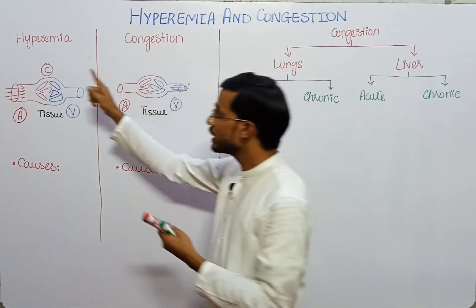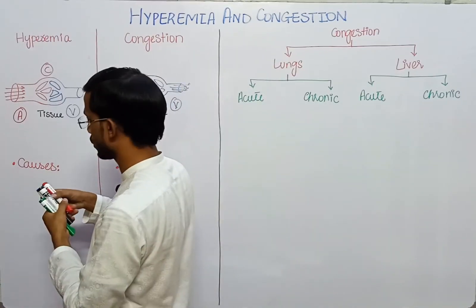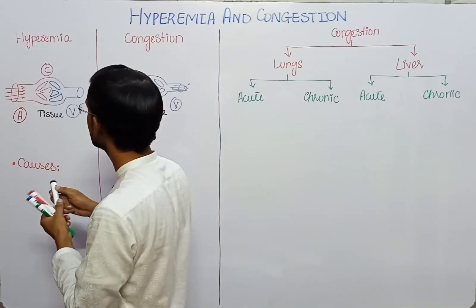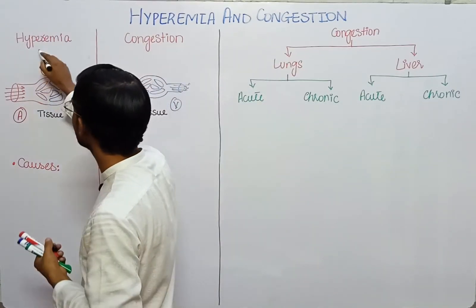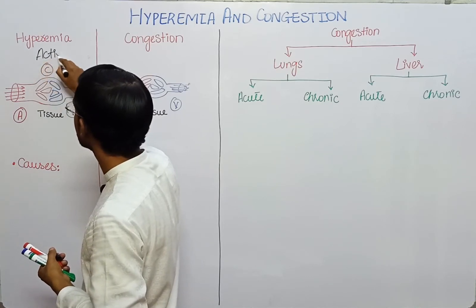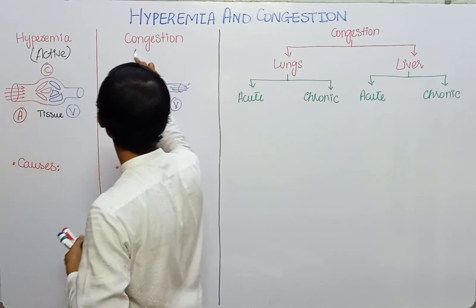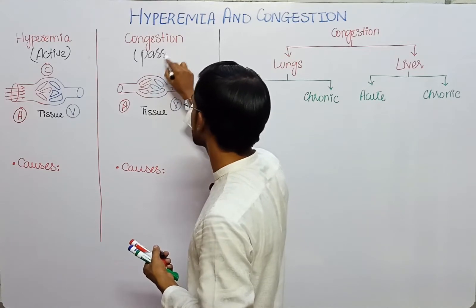Actually, hyperemia is an active situation — it occurs due to active dilation. Congestion is a passive situation.